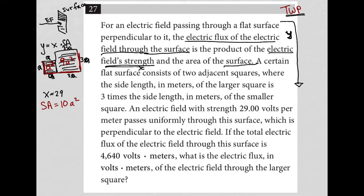Okay, so 29 volts per meter passes uniformly through this surface, which is perpendicular to the electric field. If the total electric flux of the electric field through this surface is 4640, so that's saying Y equals this number, right? Because Y was the electric flux of the electric field through the surface. So Y is 4640.